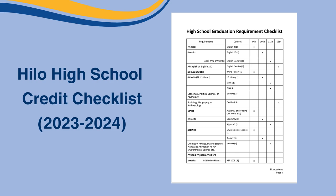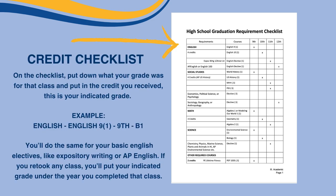You can use your transcript to fill it out, and remember this form is required for your PTP. For classes that you're currently taking, put your anticipated grade for the class. You'll need a total of four English credits in order to graduate. On the checklist, put down what your grade was for your English class and put in the credit you received — that is your indicated grade. For example, if you received a B and one credit for your English class in freshman year, you'll put B1 for that class under ninth grade.